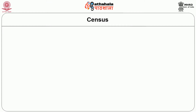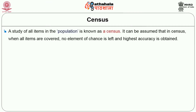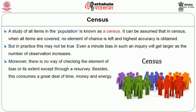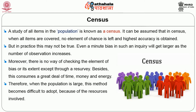The results of the study can be generalized to the population effectively when the right type of sample is used. Therefore, enormous attention should be given to sample selection. A study of all items in the population is known as a census. It can be assumed that in census, when all items are covered, no element of chance is left and highest accuracy is obtained. But in practice, even a minute bias in such an inquiry will get larger as the number of observations increases.